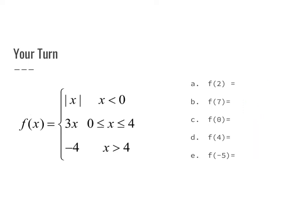Your turn. Test yourself and see if you can evaluate the function for the given values using the correct portion. f(x) equals the absolute value of x for x less than 0; f(x) equals 3x for x between 0 and 4; and f(x) equals negative 4 for x greater than 4. Go ahead and attempt a through e, then come back and check your answer. Hit pause now.